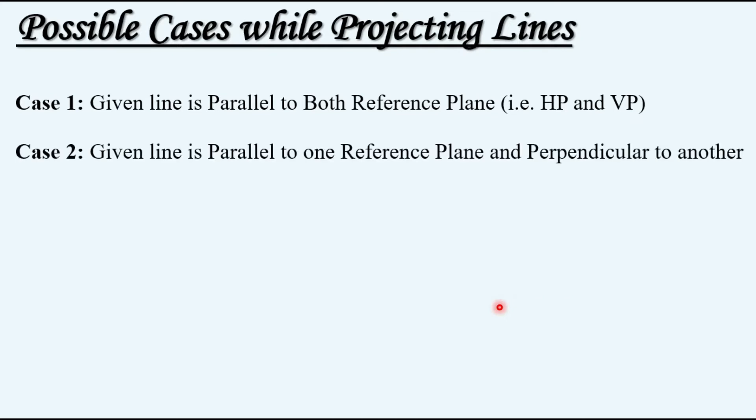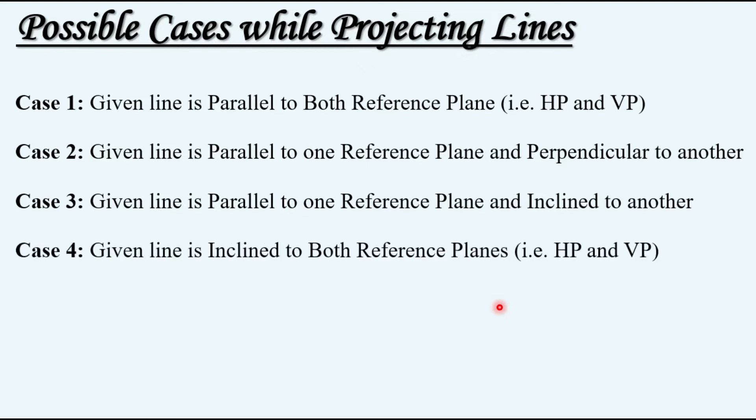In the previous video we have discussed the possible cases while projecting lines. There are four possible cases. Case number one: given line is parallel to both reference planes. Case number two: given line is parallel to one reference plane and perpendicular to another. Case number three: given line is parallel to one reference plane and inclined to another. Case number four: given line is inclined to both reference planes.